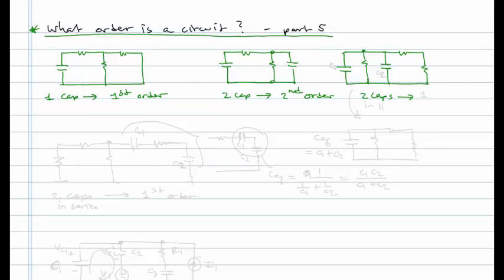Look at how these capacitors are connected. They are in parallel. Two caps in parallel. And so if they're in parallel, they're actually not two independent states. They share the same state, the same voltage. And so this is actually a first order circuit.